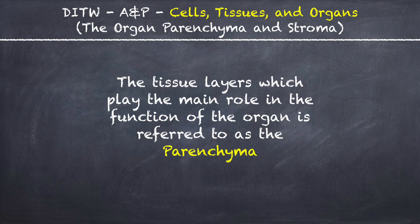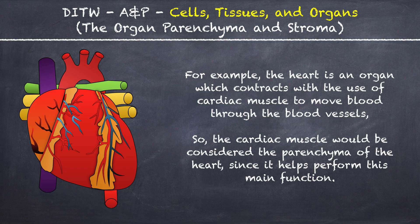The tissue layers which play the main role in the function of the organ are referred to as the parenchyma. For example, the heart is an organ which contracts with the use of cardiac muscle to move blood through the blood vessels. So the cardiac muscle would be considered the parenchyma of the heart since it helps perform this main function.